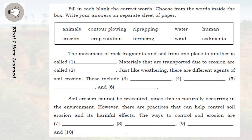Materials that are transported due to erosion are called (2) blank. Just like weathering, there are different agents of soil erosion. These include (3) blank, (4) blank, (5) blank, and (6) blank. Soil erosion cannot be prevented since this is naturally occurring in the environment. However, there are practices that can help control soil erosion and its harmful effects. The ways to control soil erosion are (7) blank, (8) blank, (9) blank, and (10) blank.